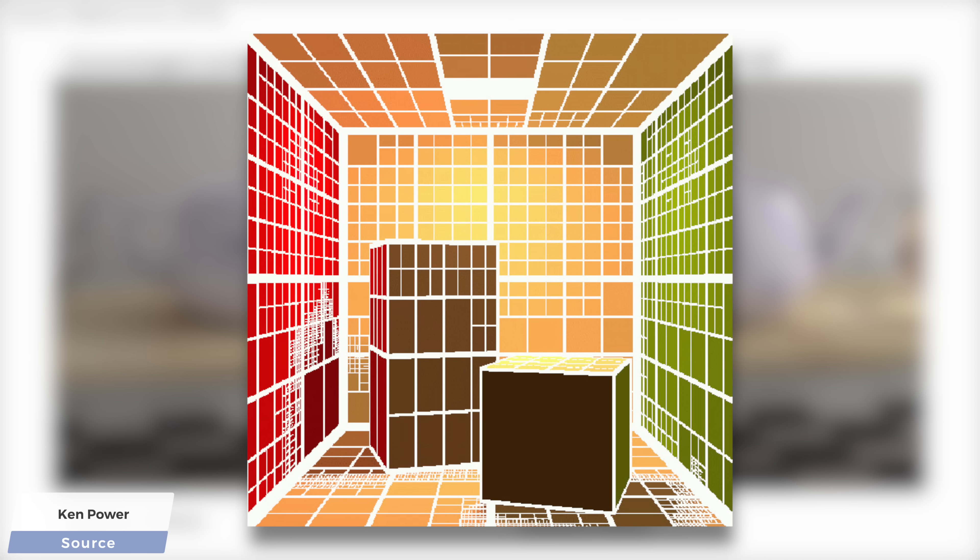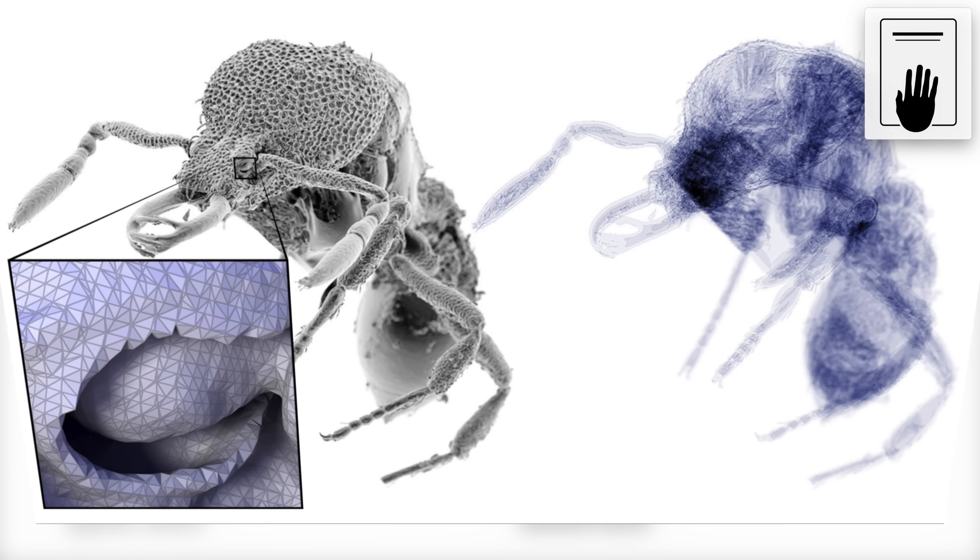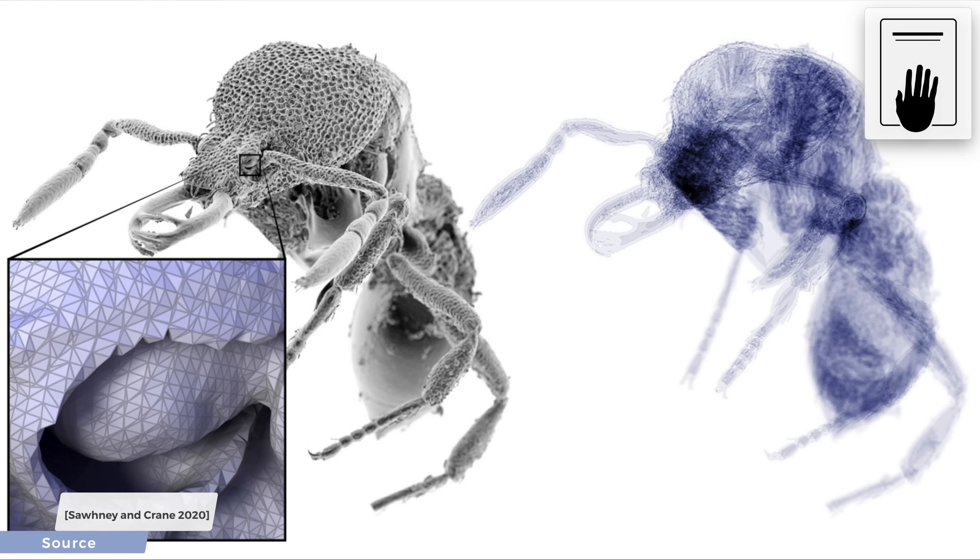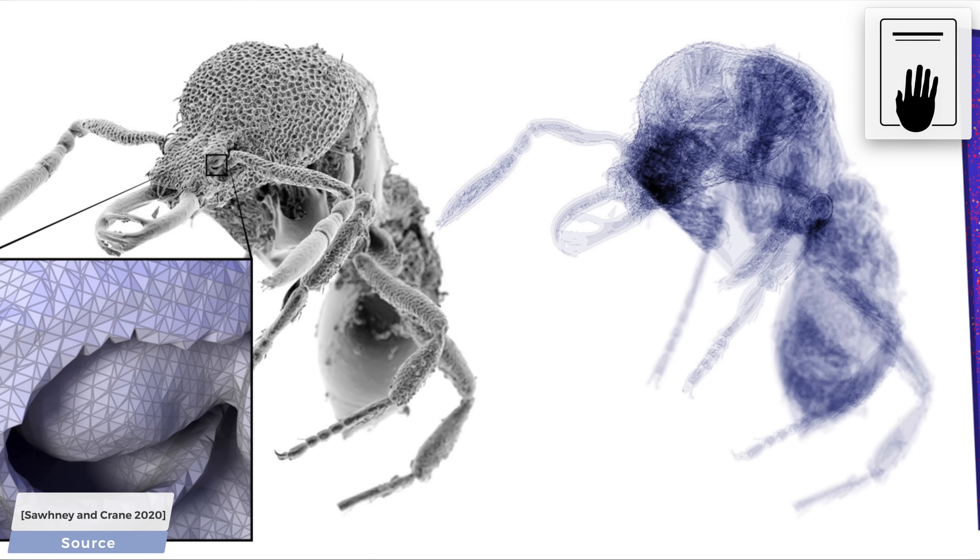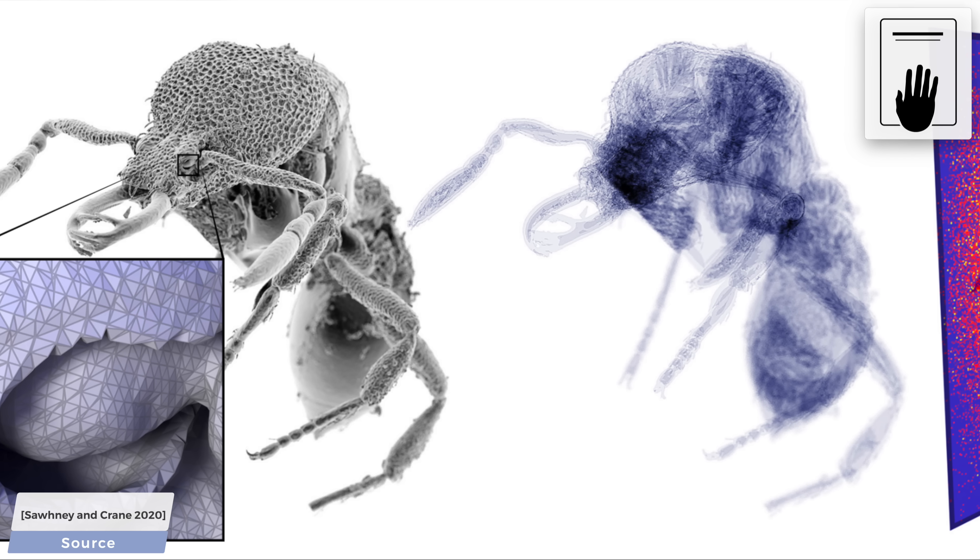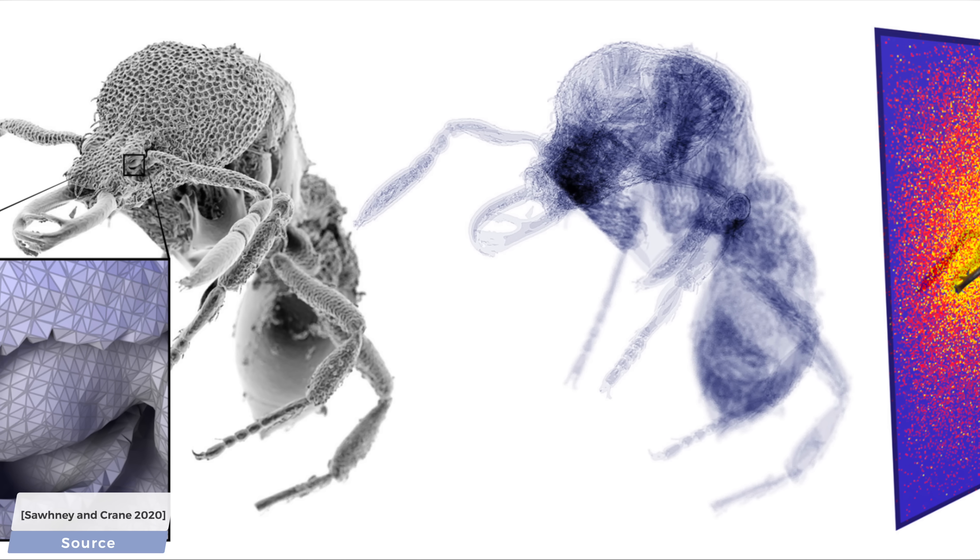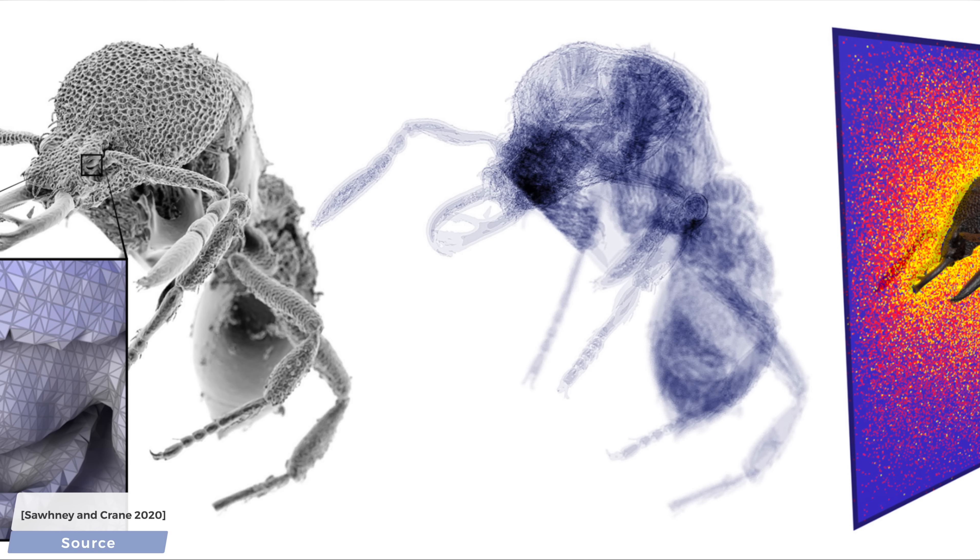However, there are still many geometry processing problems that include these headaches, and hold onto your papers because this paper shows us that we can apply Monte Carlo integration to many of these problems too. For instance, one, it can resolve the rich external and internal structure of this ant.